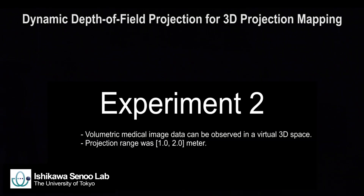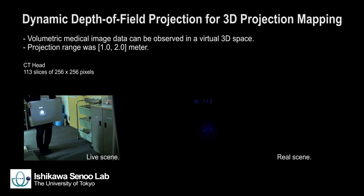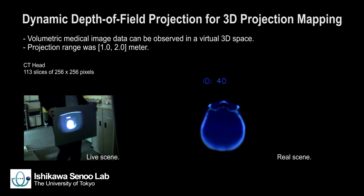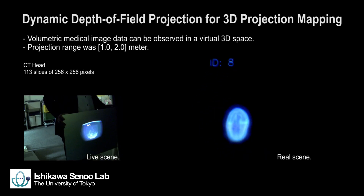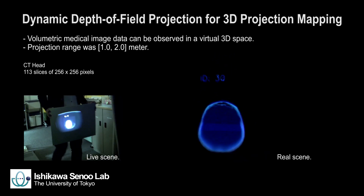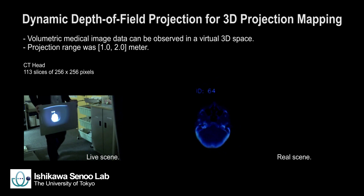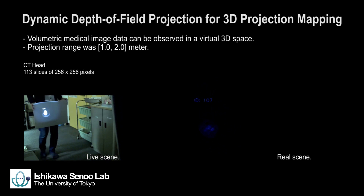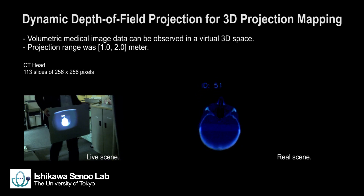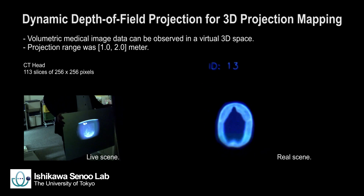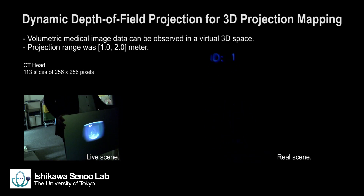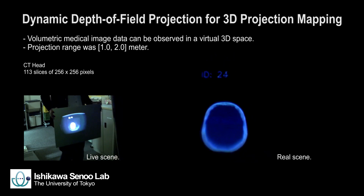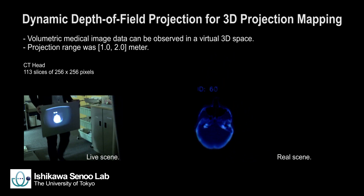In the second experiment, volumetric medical data could be projected and observed in a virtual 3D space. A CT head scanning image was projected in a 1.0 meter virtual space. When the board was moved, each slice image could be clearly observed.